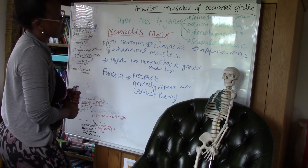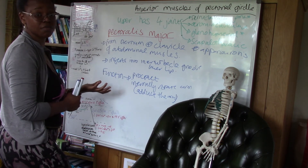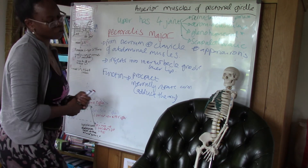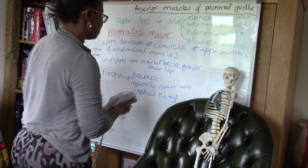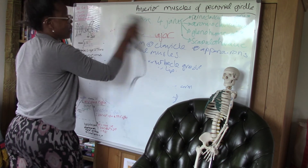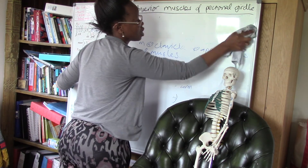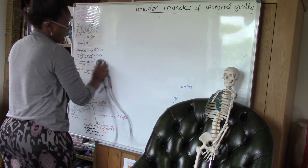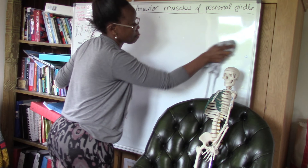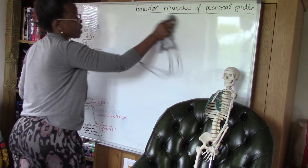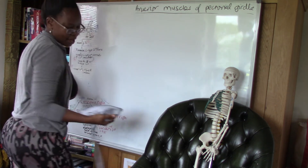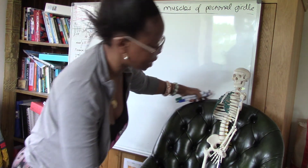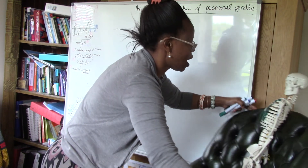Having discussed the anterior muscles of the pectoral girdle, I'm now going to look at the brachial plexus — how it arises — and then finally at the axillary artery.